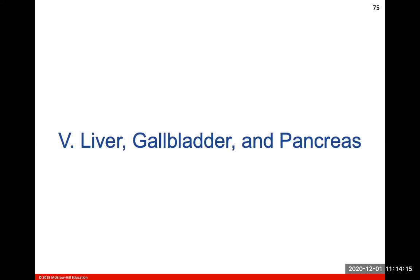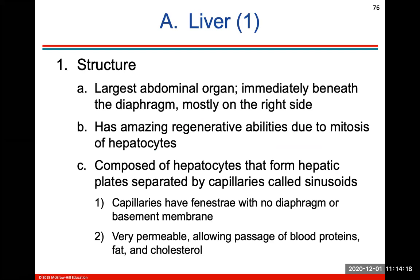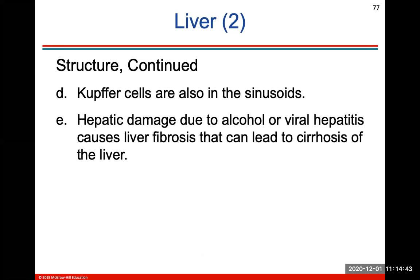Now we'll get into some of the accessory organs: your liver, gallbladder, and pancreas. The liver is immediately beneath the diaphragm and has amazing regenerative abilities due to mitosis of its liver cells, called hepatocytes. It's composed of hepatocytes that form hepatic plates separated by capillaries called sinusoids, which are extremely permeable and allow passage of blood proteins, fat, and cholesterol. Kupffer cells are also in the sinusoids. Hepatic damage due to alcohol or viral hepatitis will cause liver fibrosis that can lead to cirrhosis, or scarring of the liver tissue.